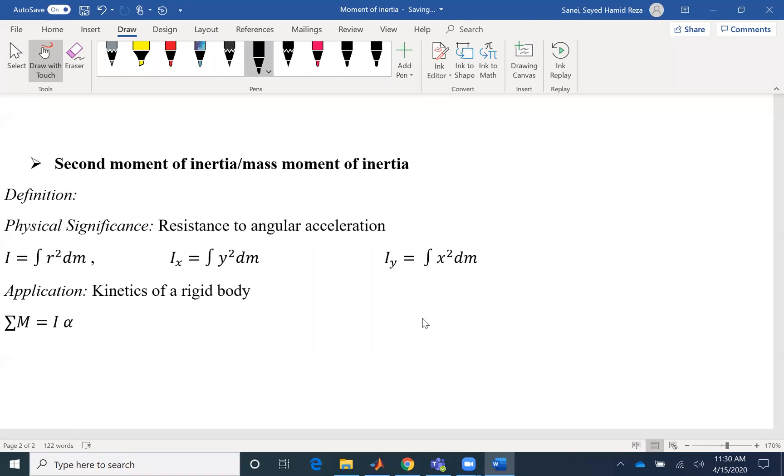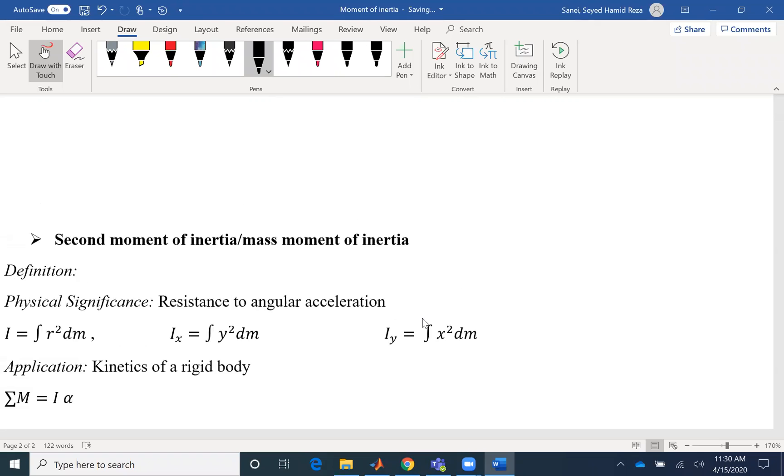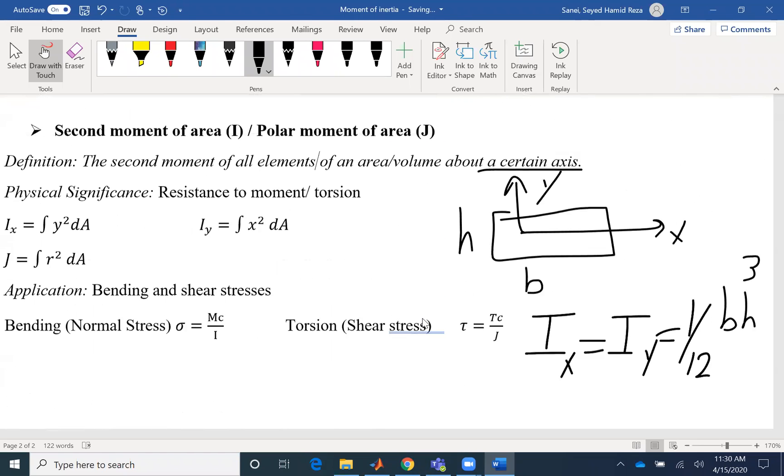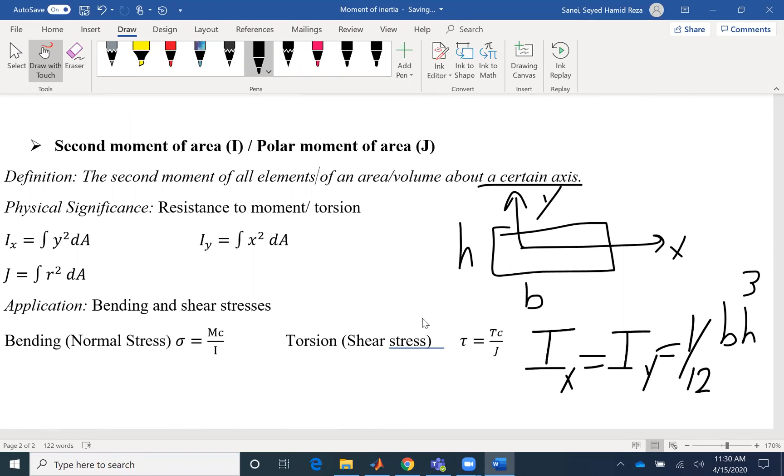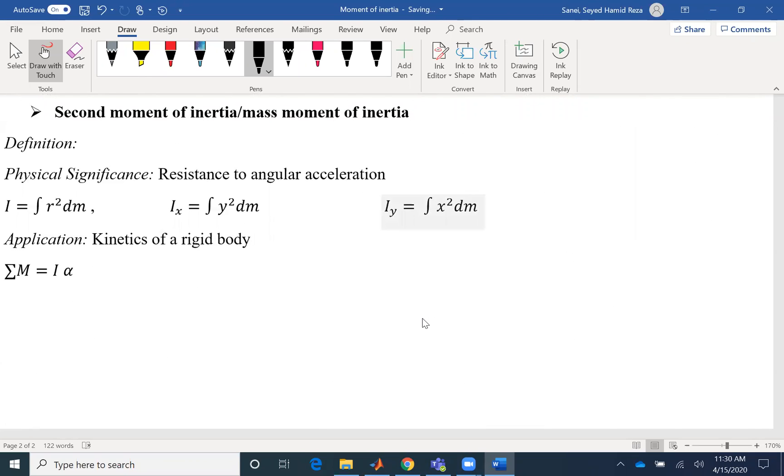Then the other geometrical parameters that we deal with is second moment of inertia or mass moment of inertia. I've seen that people use moment of inertia for moment of area as well. That's just a misnomer. But whenever we're talking about inertia or whenever the mass comes into play, then we are talking about second moment of inertia.